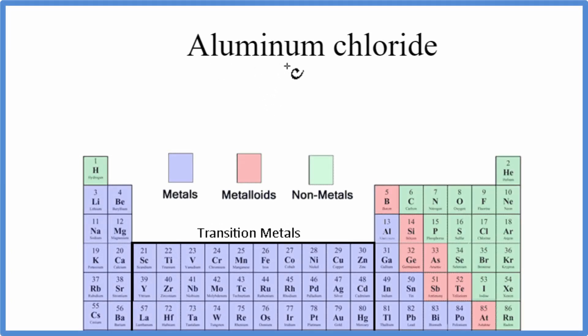To write the formula for aluminum chloride, we go to the periodic table. We look up aluminum, that's Al, and then chloride, that's our chlorine, that's Cl.